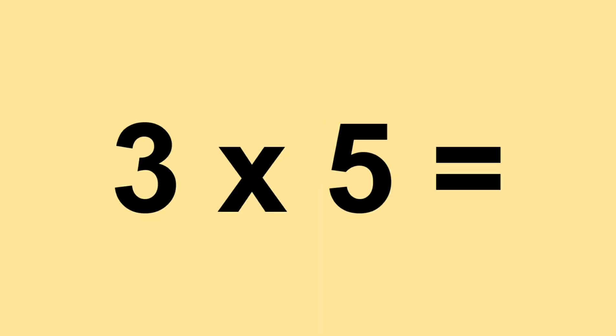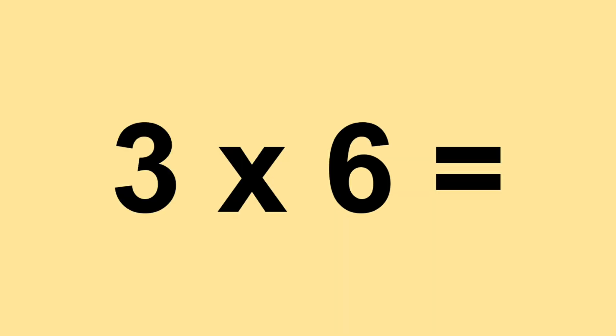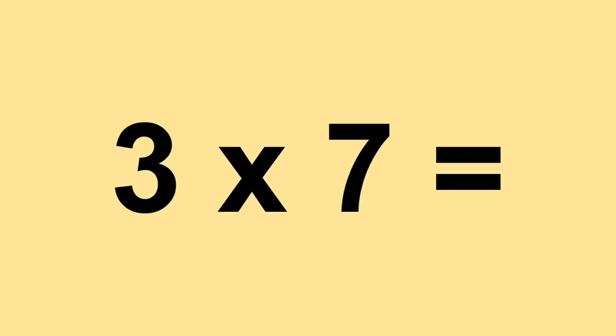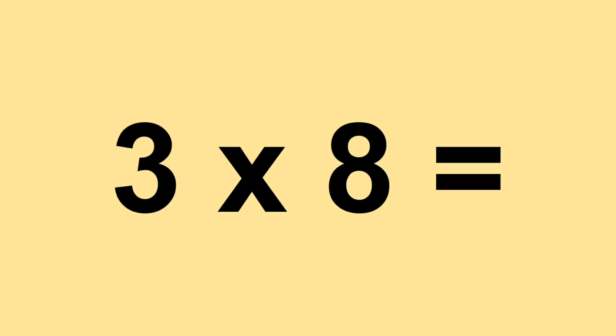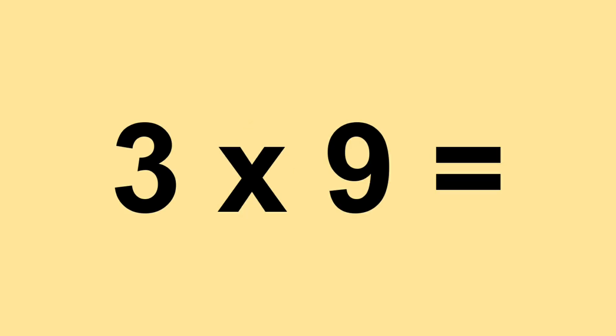Three times five equals fifteen. Three times six equals eighteen. Three times seven equals twenty-one. Three times eight equals twenty-four. Three times nine equals twenty-seven.